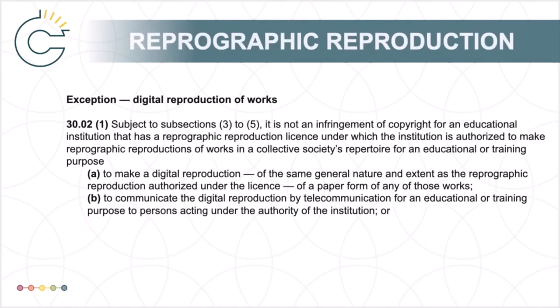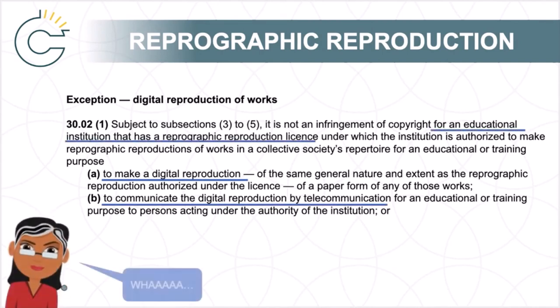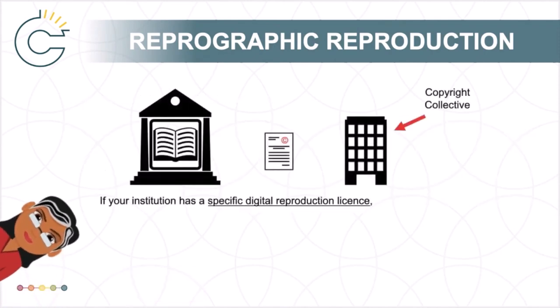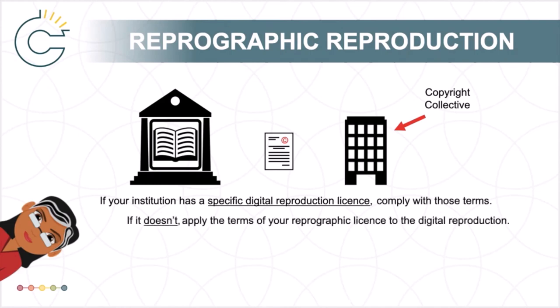As Section 30.02 attempts to explain — and there is no case law on this at this point — it is also not an infringement of copyright to make a digital reproduction of a reprographic reproduction in order to include it in a telecommunication of a lesson, as long as you have a reprographic reproduction license with the collective licensing agency. Essentially, if you have entered into a specific digital reproduction license agreement with a collective, you must follow those terms and conditions when making a digital reproduction or copy. Otherwise, you can comply with the license terms and conditions applicable in your reprographic reproduction license to the extent that they are reasonably applicable to a digital reproduction.